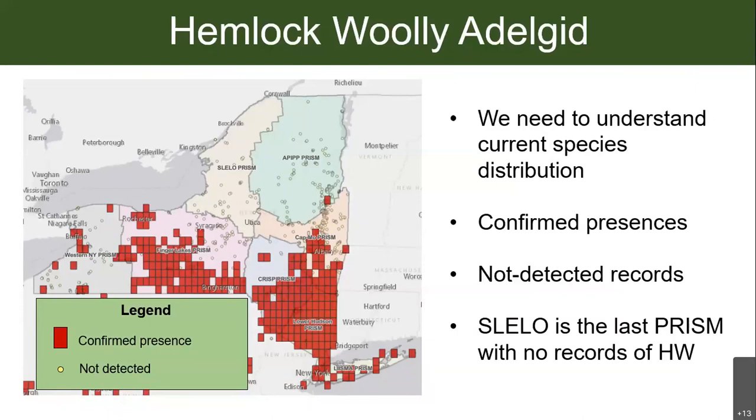Those yellow dot survey points are really important. In SLILO, we have some of those points so we know that hemlock woolly adelgid has not been found in those areas. If it was just blank and no one had surveyed there, we wouldn't really know if it indeed was not there or if we just haven't noticed it yet. So these 'not detected' records are hugely important, and that brings us to IMAP Invasives.